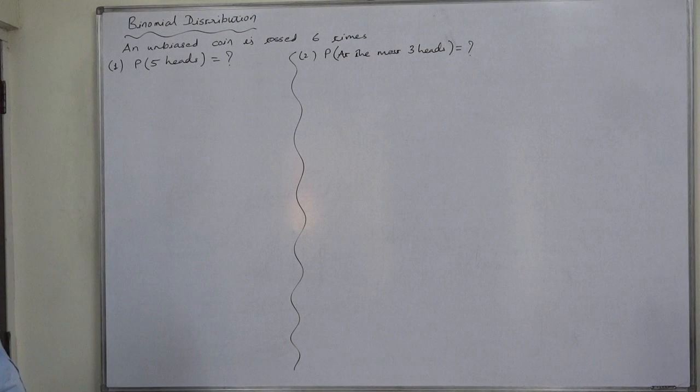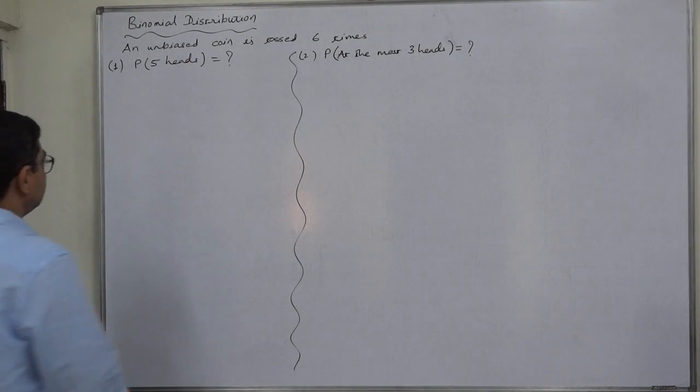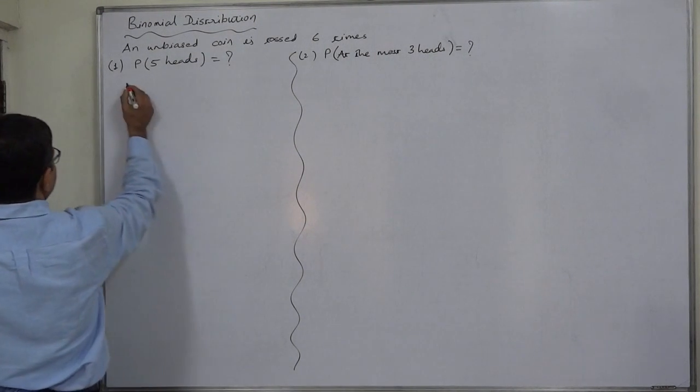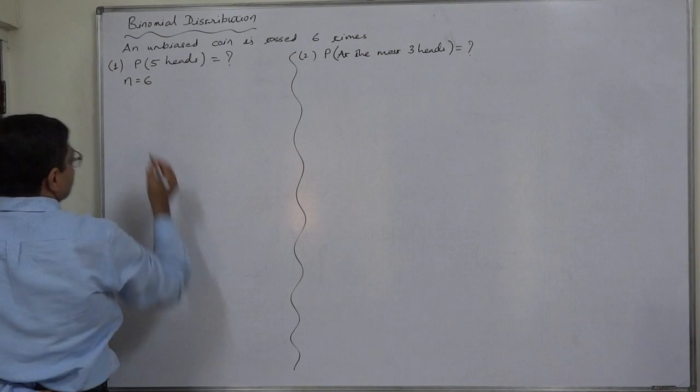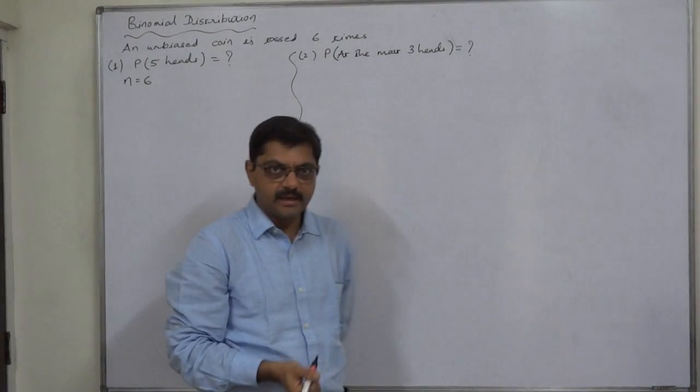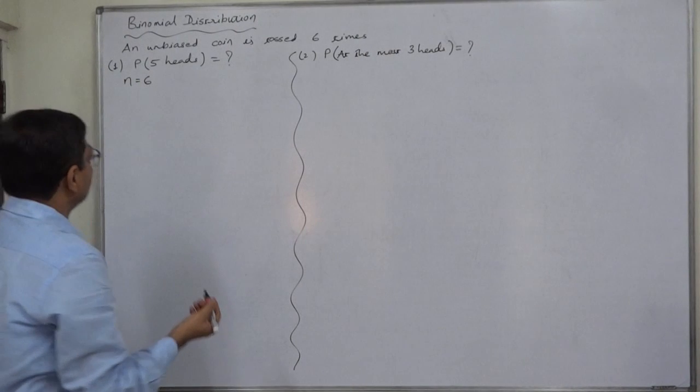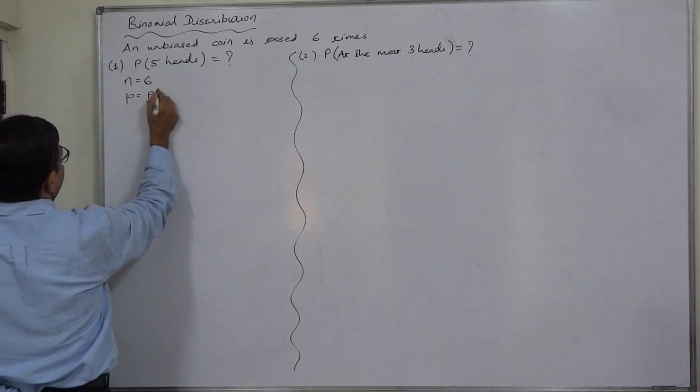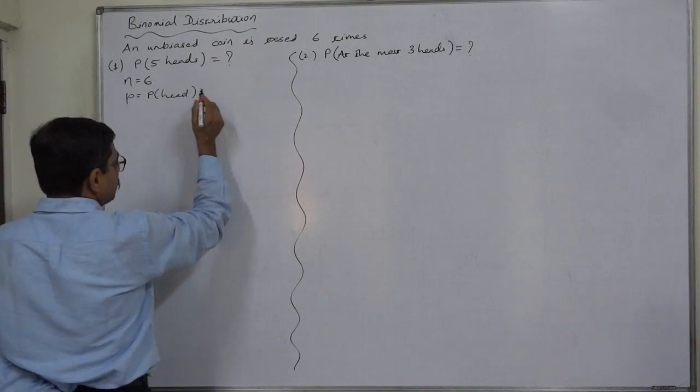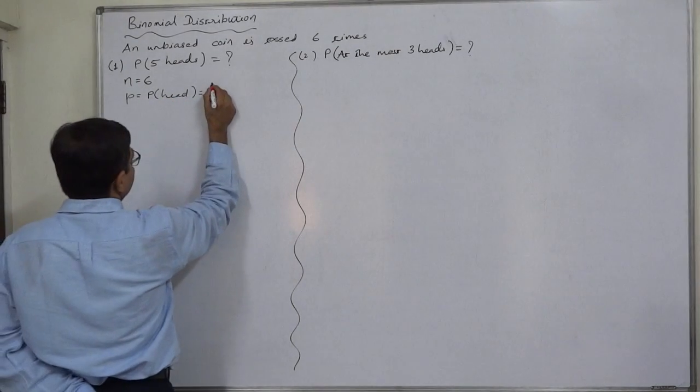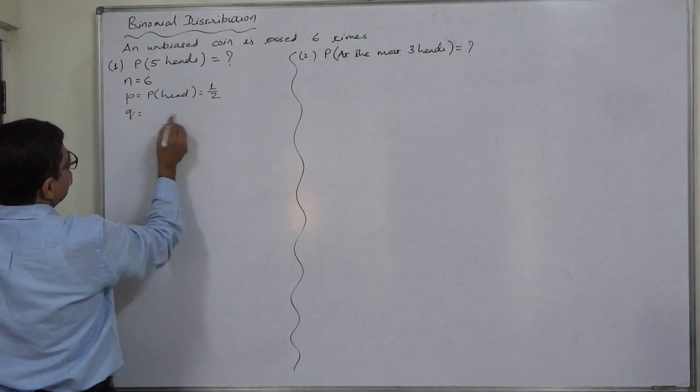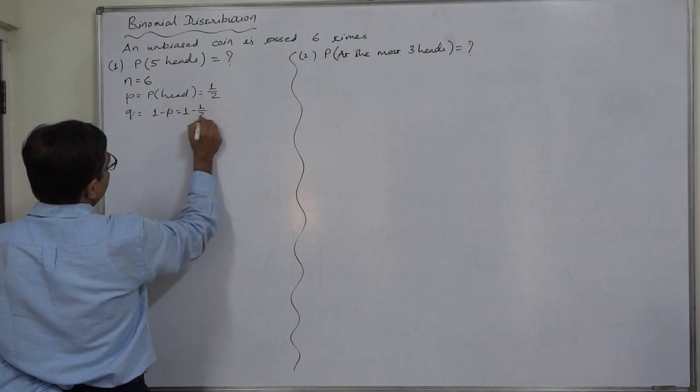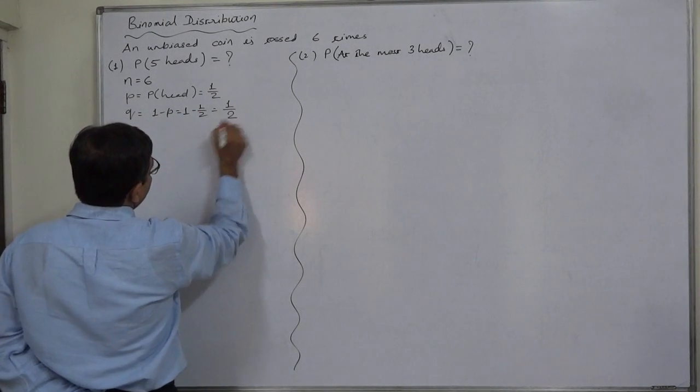Six times a coin is tossed and we are interested in getting heads. In the first case, five heads. So first of all, what is this six? It is small n, the number of times the experiment is homogeneously repeated. P will be the probability of head, constant in all trials, that will be one by two. And Q, the probability of not getting head, will be one minus P, one minus one by two, that is one by two.